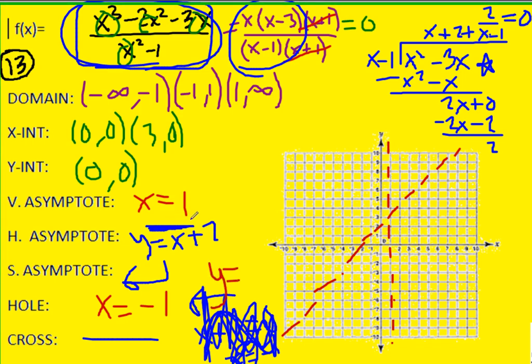So again, the way to find where your y value is, take this negative one and plug it into your factored equation. So you'll get negative one times negative four all over negative two. So positive four, negative two is going to give you a value of negative two. So negative one comma negative two.